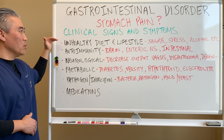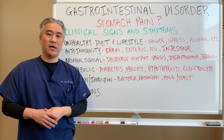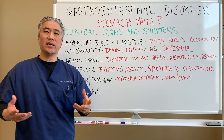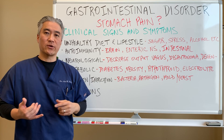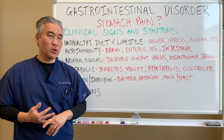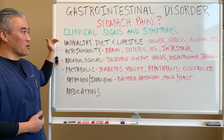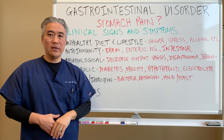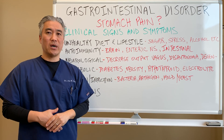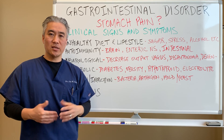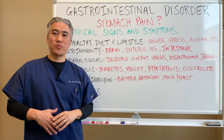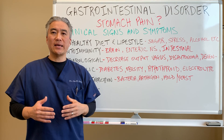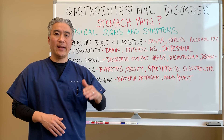First, we look at whether the patient has a healthy diet and lifestyle — do they live a clean, stress-free life with proper organic foods, avoiding foods that create inflammation. Foods like gluten and dairy are big factors in GI issues. As our foundational piece, we assess diet and lifestyle, and if needed, modify things like refined sugars, gluten, dairy, and sometimes soy. Lectins like nuts and seeds can also be problems for some patients.